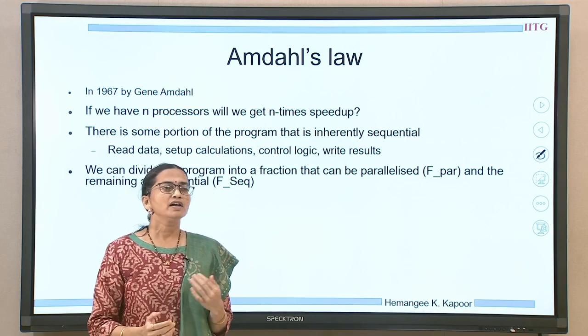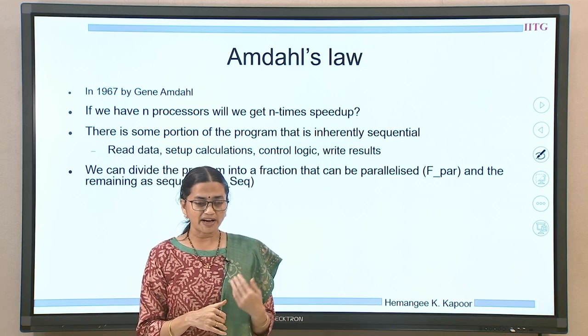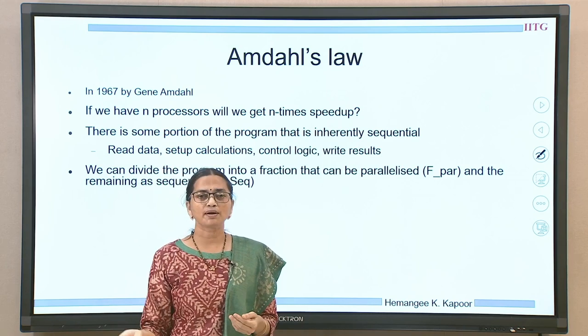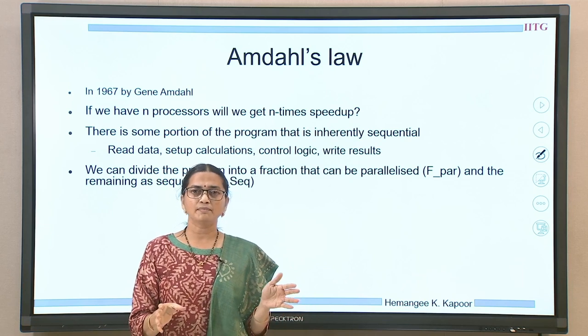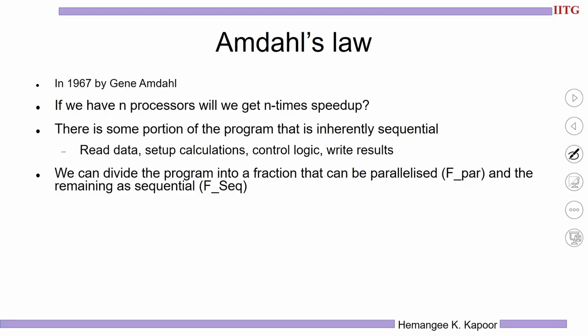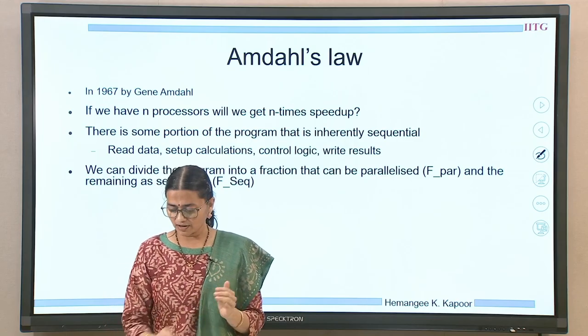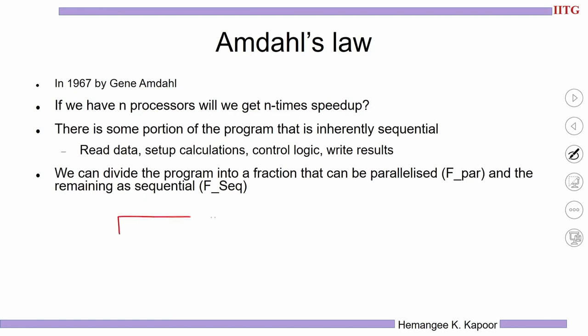For example, you want to read the data, there is some calculation, some control logic, you have to write the results, communicate information between one segment of the program to the other. So there is a significant portion in the program which is sequential and which cannot be broken into pieces. So I can divide a program into a fraction that is sequential, FSEQ, and a portion which is parallelized — F_par and F_sequential.